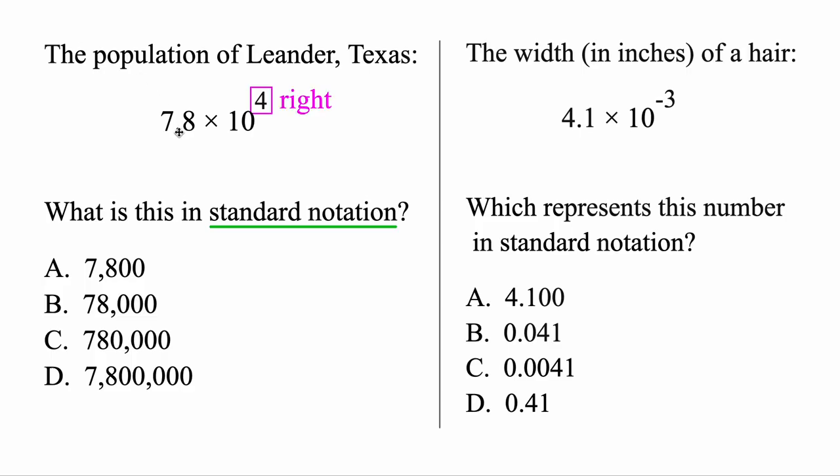Therefore, we're going to move this guy right here four places to the right. Let's go ahead and copy over 7.8. Okay, then we're going to hop over 1, 2, 3, and 4.